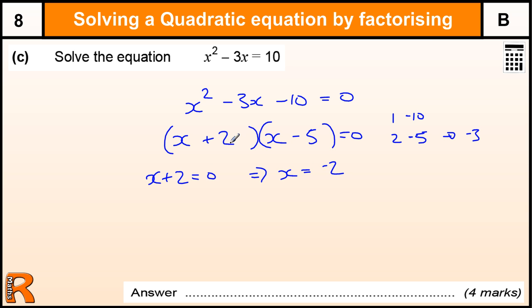Because that is the only time this whole equation is going to be 0, when this bracket is 0 or when this bracket is 0, because 0 times anything is 0. The second bracket x minus 5 equals 0 implies that x equals 5. So we've got x equals minus 2 or 5 for 4 marks.